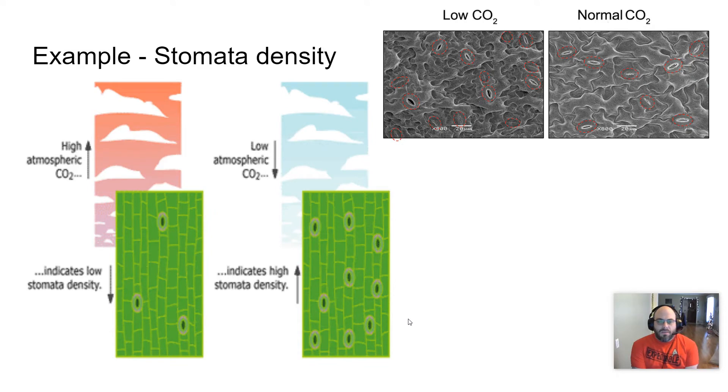Another example is stomata density. Stomata are these little holes in leaves, and the purpose of the holes is twofold. They allow water to leave the leaves, which allows water to come up from the roots via capillary action. And they also allow CO2 in, because CO2 is necessary for photosynthesis to occur. So these little mouths, you can see they look like little mouths, they open up and allow CO2 in. So if there's low CO2, the leaf will make more stomata with the idea of getting more CO2 in.